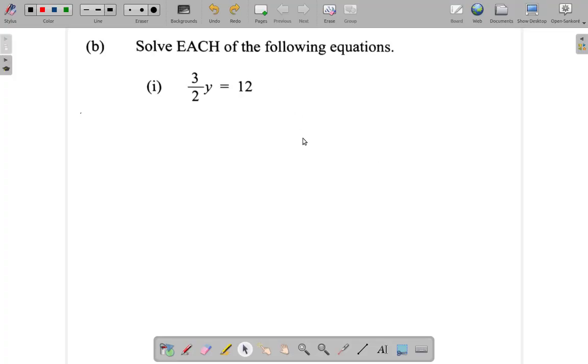Let's look at part B, one of the question. It says solve each of the following equations. We start with this one. We have 3 over 2 times y is equal to 12.